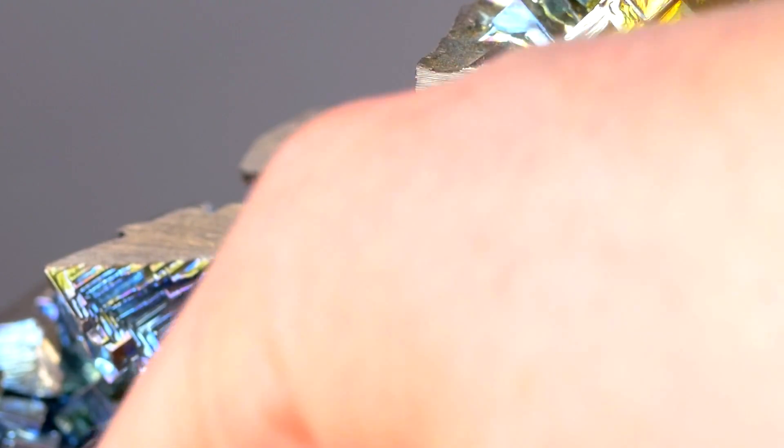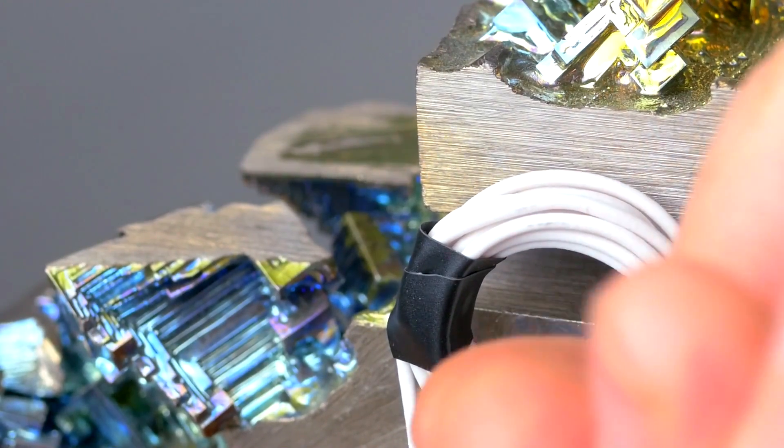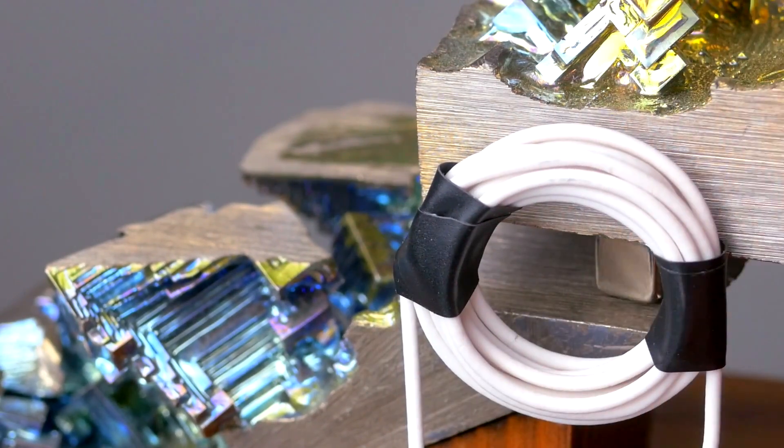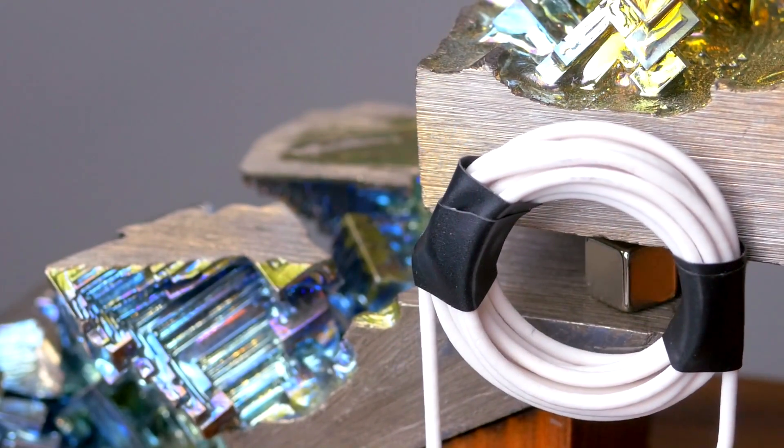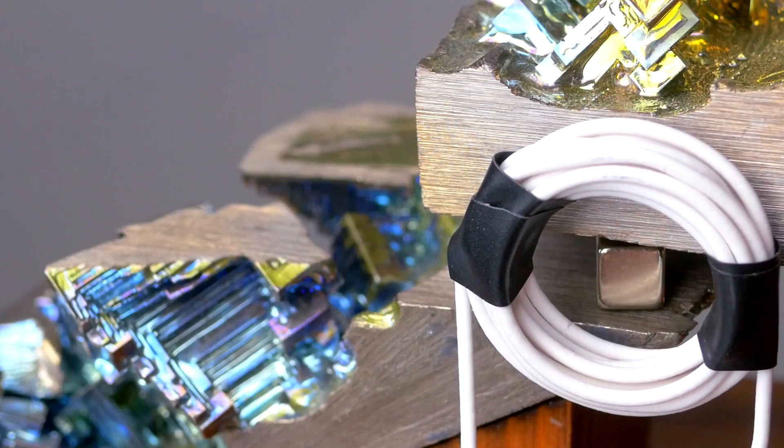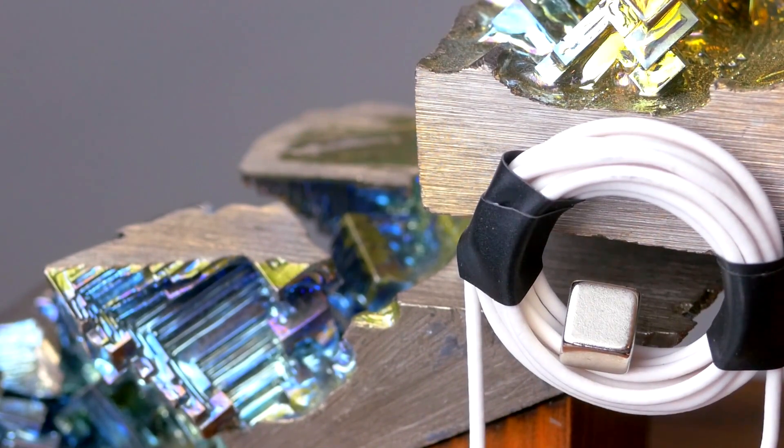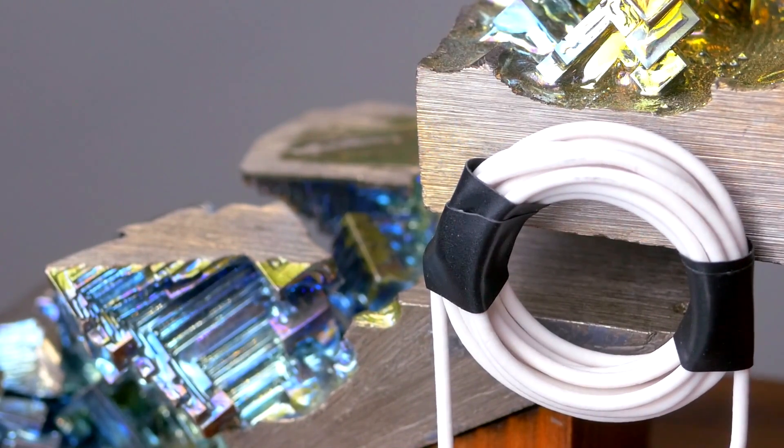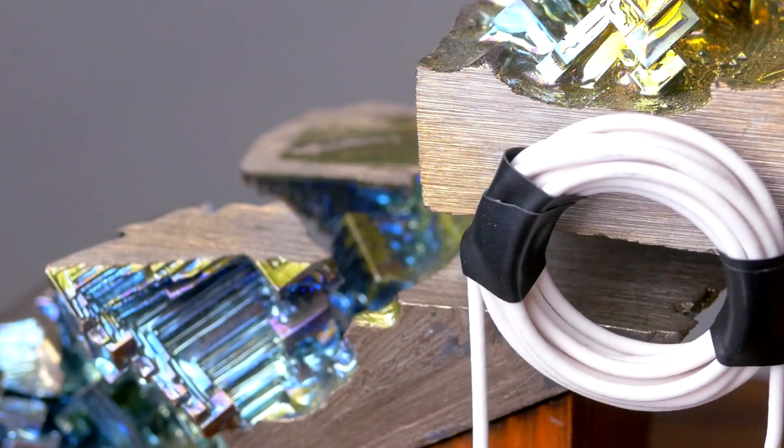And once again, the magnet has pulled out of place. I suppose that is to be expected seeing as how the coil is wanting to pull the magnet into its center. Let me see if I leave the charge on instead of disconnecting it. Okay. So you can see the magnet pulled to the center of the coil and stayed there when I left the charge on.